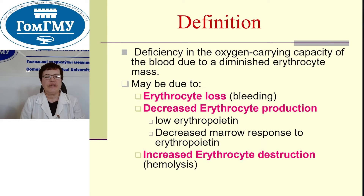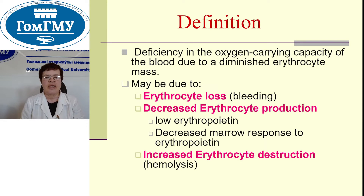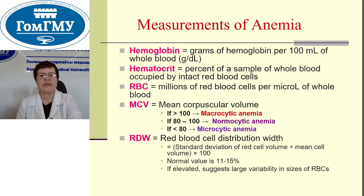Definition. Anemia is a deficiency in the oxygen carrying capacity of the blood due to a diminished erythrocyte mass. It may be due to erythrocyte loss and bleeding, decreased erythrocyte production — low erythropoietin or decreased marrow response to erythropoietin — and increased erythrocyte destruction, that is, hemolysis.